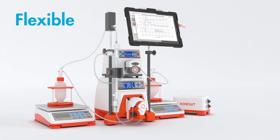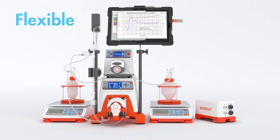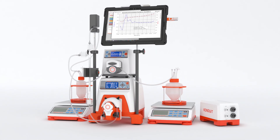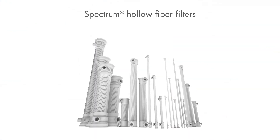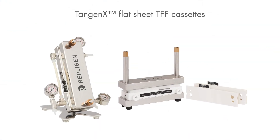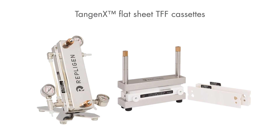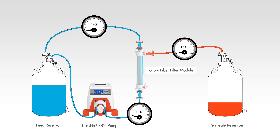The KR2i TFF system is designed for running volumes anywhere from 10 liters down to a few mils. There's no other system on the market that can have that level of versatility. It's flexible to run either hollow fiber or cassettes, anywhere as small as 20 square centimeters of membrane area to as large as 0.35 meters squared.